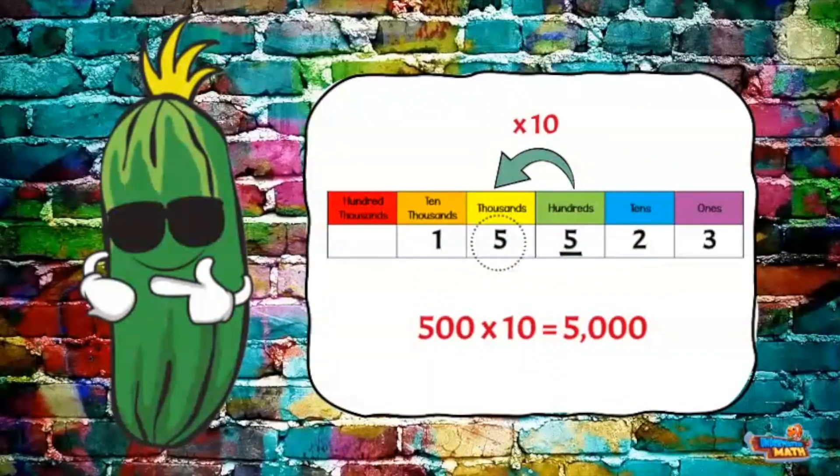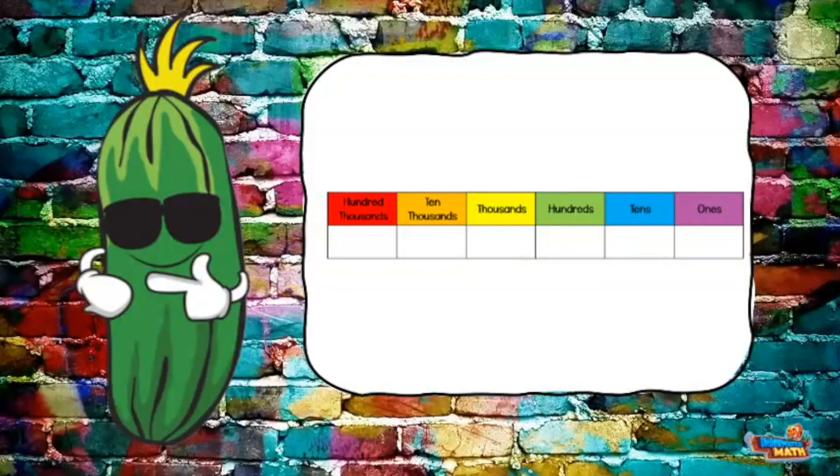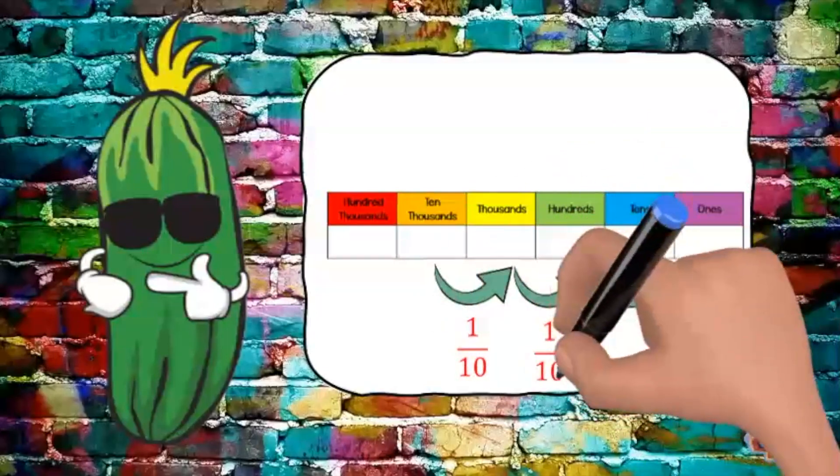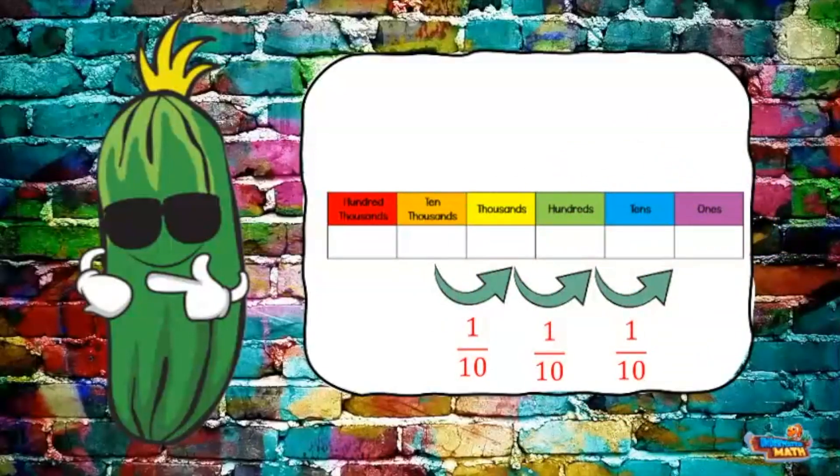The thousands place is 10 times larger than the hundreds place. Place value relationships do not have to be a big deal. As the place value moves to the right, the value is one-tenth smaller. As the place value moves to the left, it is 10 times larger.